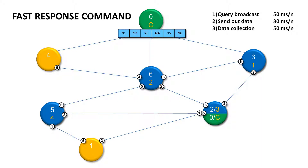There are a few predefined fast response commands that you can use right away. The first one collects information if a new node was pre-bonded by one of the nodes in the network during the remote bonding process. The second one gives you information if there are any data available for reading from UART or SPI peripheral on each node. So once you know there are data available on a particular node, you can send a command to read data just from that node — this will be much faster than the standard polling approach.